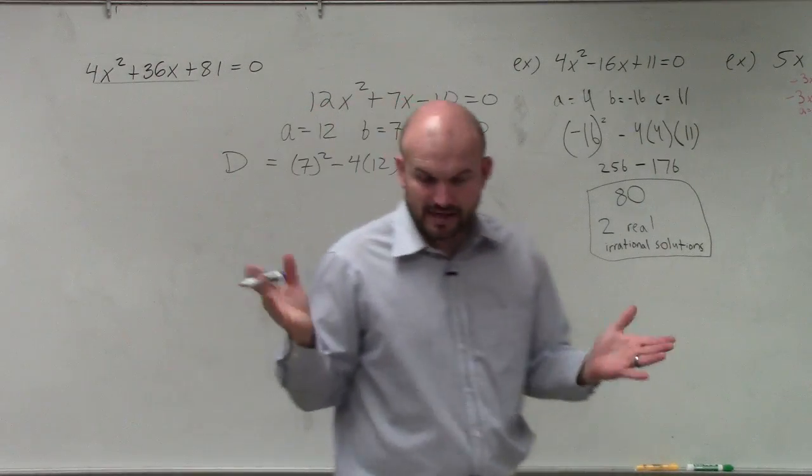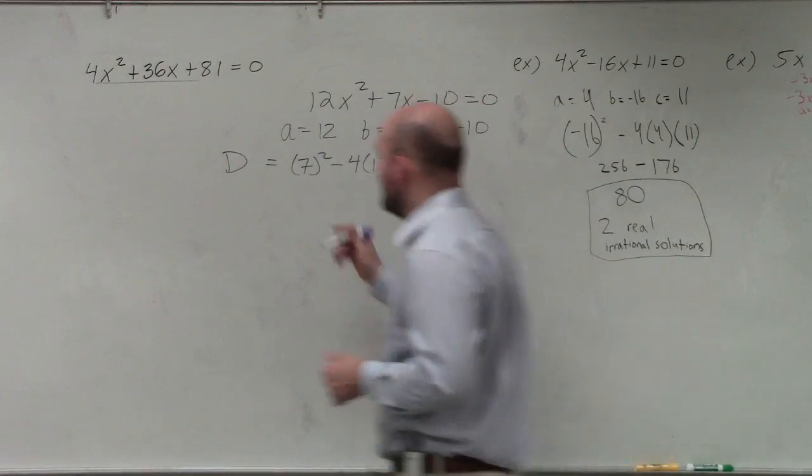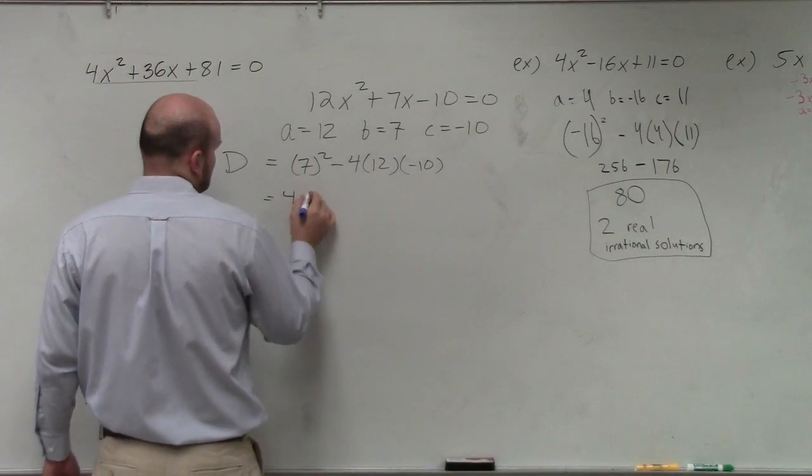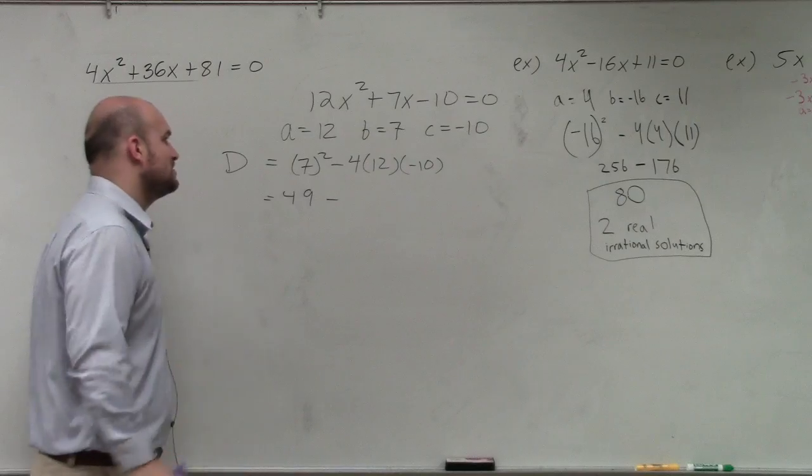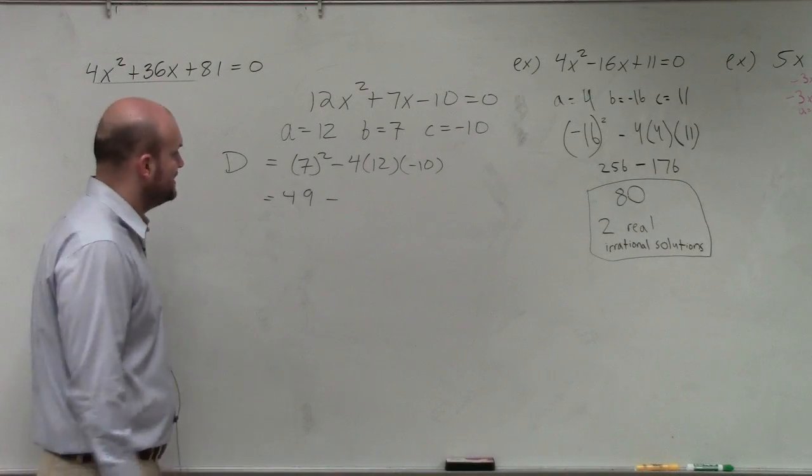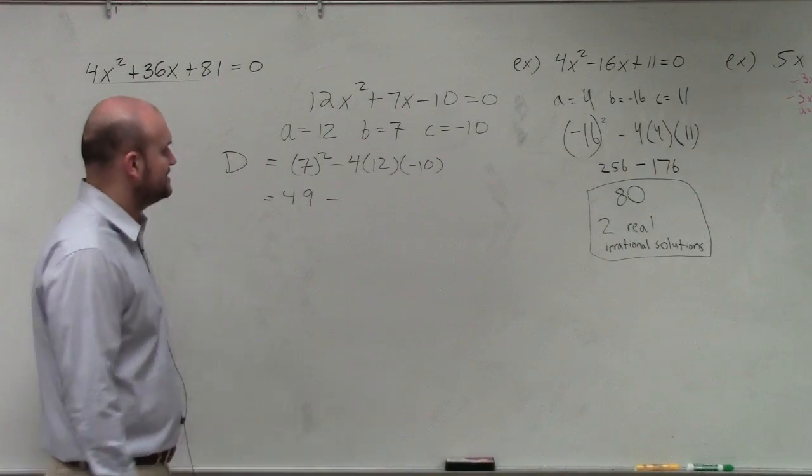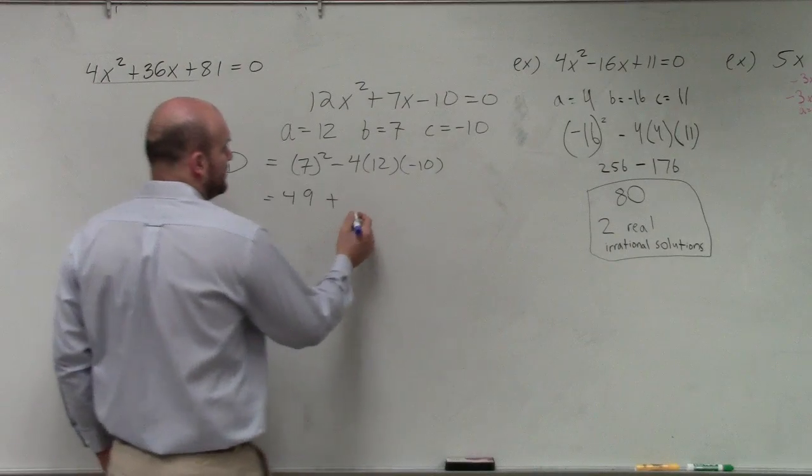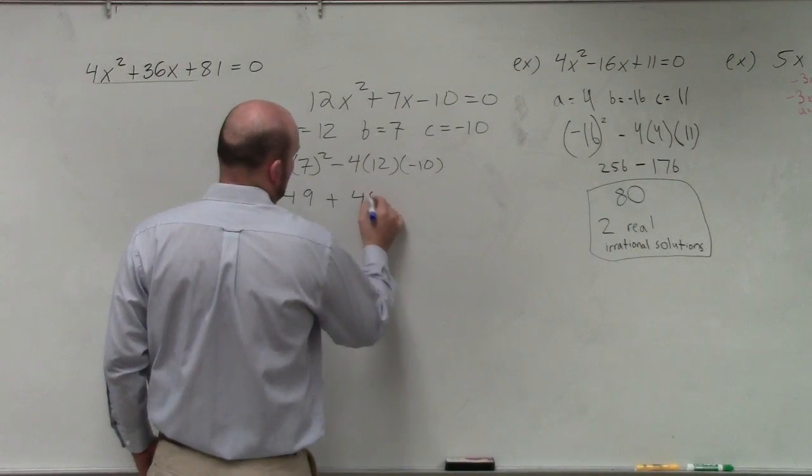Everybody follow me? OK. So therefore, I have 49 minus 4 times 12 is going to be 48. And then that's going to be times negative 10. So that's going to be 24, so 480.